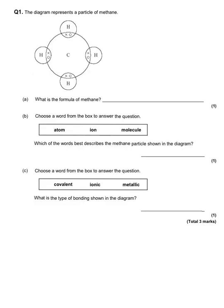This first question is reasonably straightforward; it gets more difficult as they go through. The diagram represents a particle of methane, and we've got a picture here showing the atoms. We have got a dot and cross diagram, and the dots and the crosses are representing electrons in a position between two atoms — there's a carbon and a hydrogen very close to this pair of electrons — so they are sharing that pair of electrons.